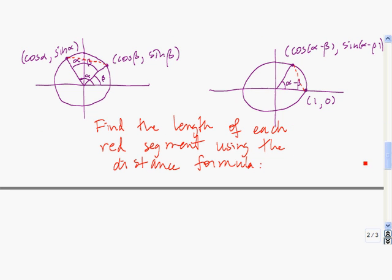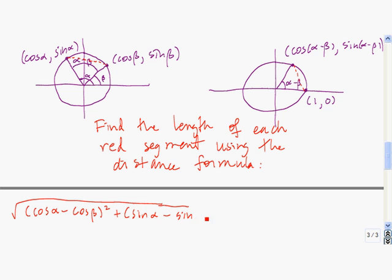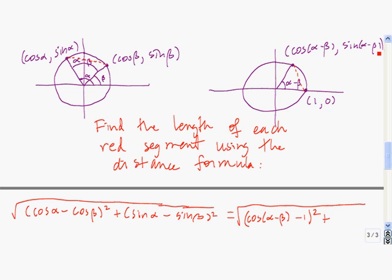The distance formula says that the distance between these two points is the square root of the square of the first x-coordinate minus the second x-coordinate — so cosine of alpha minus cosine of beta, squared — plus the square of the difference in y-coordinates, so plus sine of alpha minus sine of beta, squared. This segment equals that segment, so that equals the square root of the first x-coordinate minus the second x-coordinate, plus the square of the y-coordinates: sine of alpha minus beta minus zero is just sine of alpha minus beta.